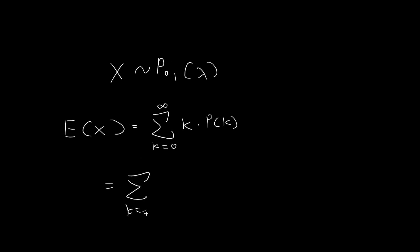The first thing we do is substitute in the expression for the probability of getting the value k for the random variable x, assuming the Poisson distribution. That would be e to the power of negative lambda, times lambda to the power of k, divided by k factorial. So we just need to do a bit of algebra to evaluate this expression to get the expected value.